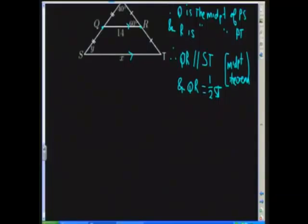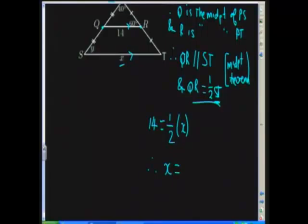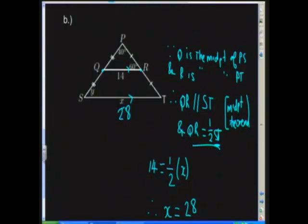We know that QR is 14, and that's going to be equal to a half of ST. Remember, ST was given as X. So 14 is equal to a half of X. Therefore X must equal 14 divided by a half — tip and times — so we get X is equal to 28. Therefore ST is equal to 28.